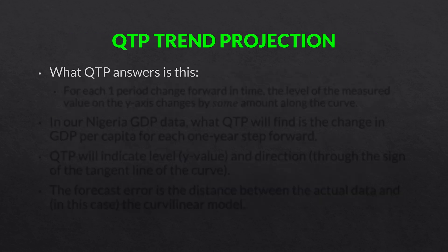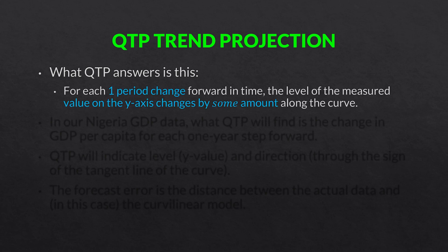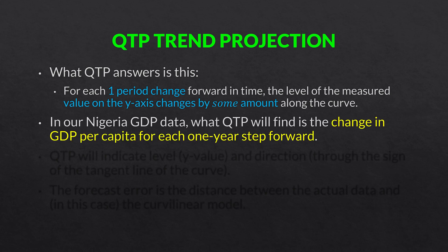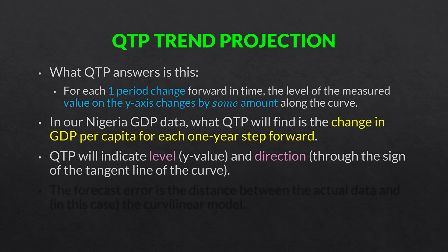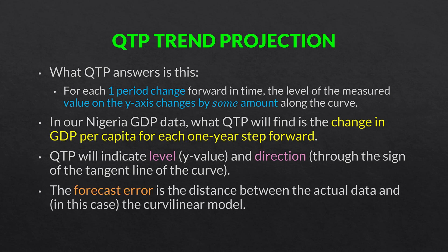QTP trend projection — what QTP answers is this: for each one period change forward in time, the level of the measured value on the y-axis changes by some amount along the curve. In our Nigeria GDP data, what QTP will find is the change in GDP per capita for each one year step forward. QTP will indicate the level, the y value, and direction through the sign of the tangent line of the curve. And remember, the forecast error is the distance between the actual data and the curvilinear model's forecast.